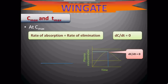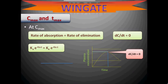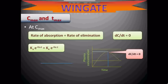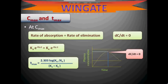At dC/dT equal to zero, the rate of absorption equals the rate of elimination: Ka · e^(−Ka·T) = Ke · e^(−Ke·T). Solving this equation, Tmax = 2.303 × log(Ka/Ke) / (Ka − Ke).